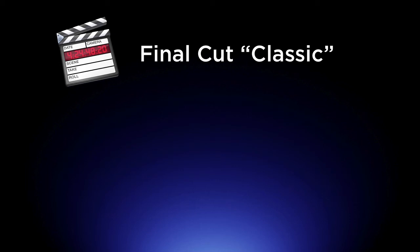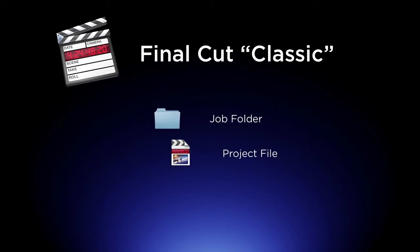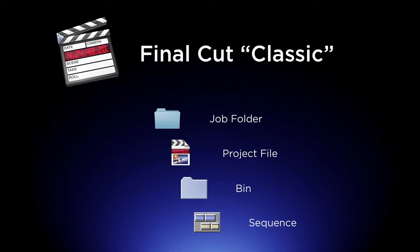In Final Cut Classic, we had a way that we were used to working. We had a job folder and in that job folder we had a project file, and when you'd launch that project file you'd see your bins, and inside your bins you'd have a sequence. We've worked this way for a long time.